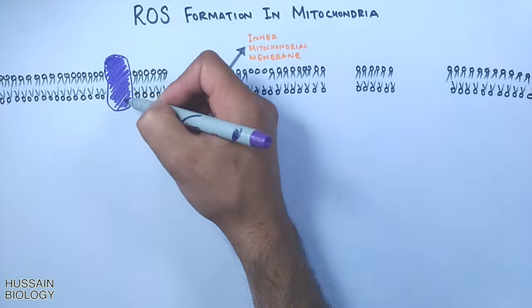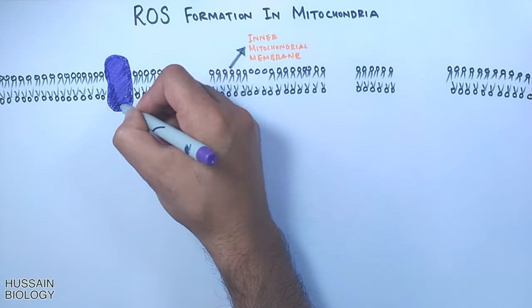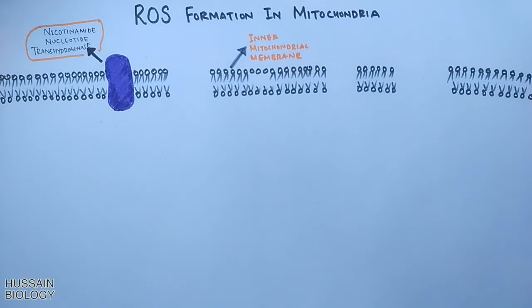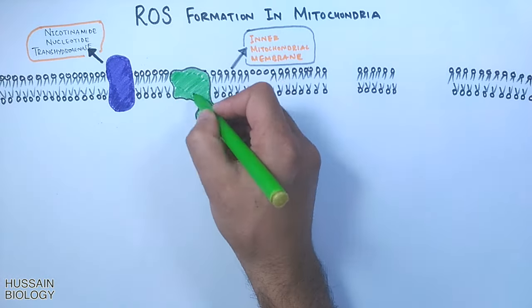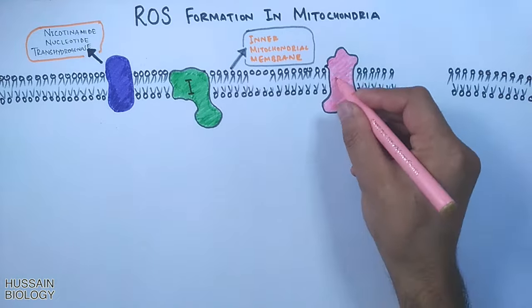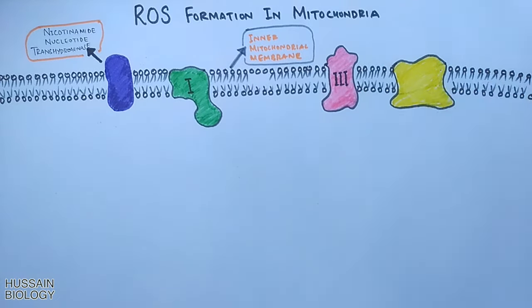In this diagram we can see the inner mitochondrial membrane having nicotinamide nucleotide transhydrogenase enzyme. Then there are components of electron transport chain like complex one, complex two (not shown here), complex three, and complex four.